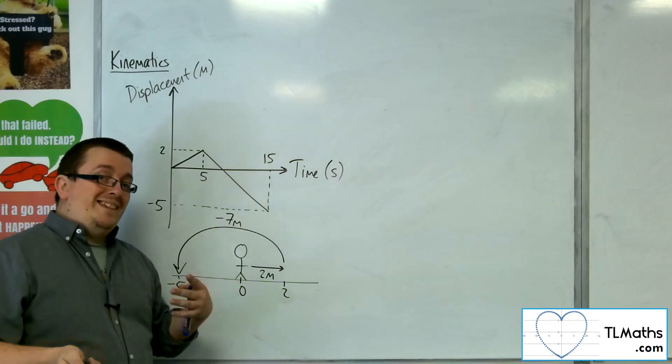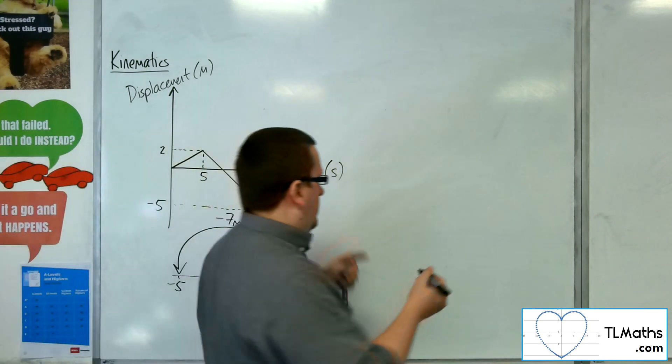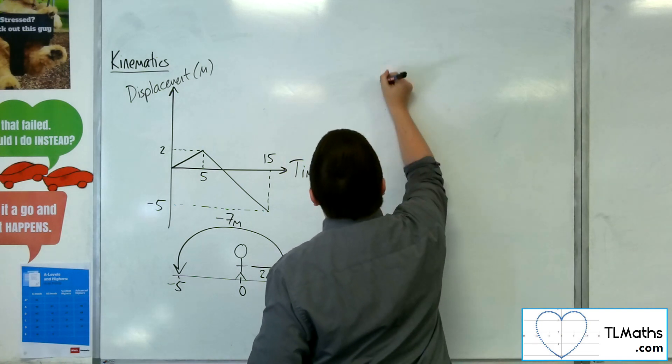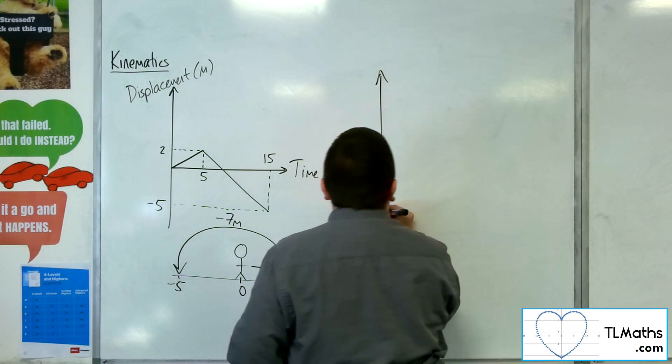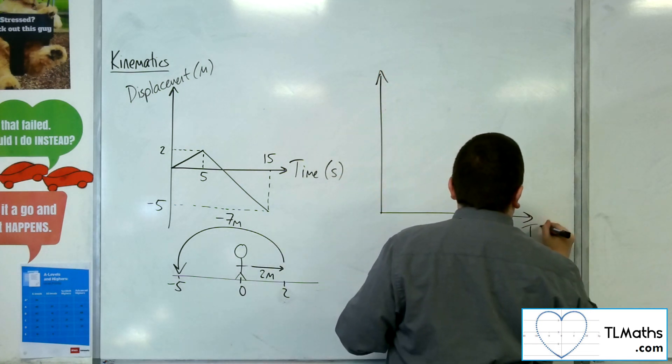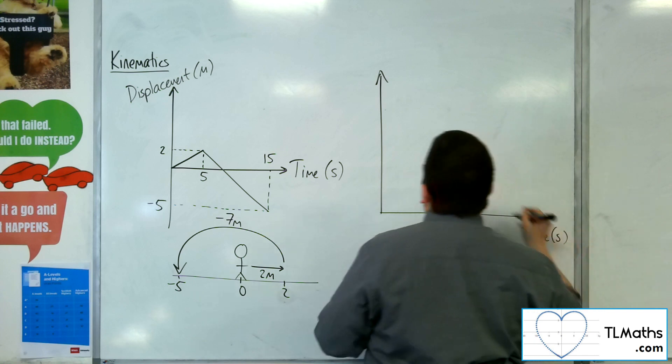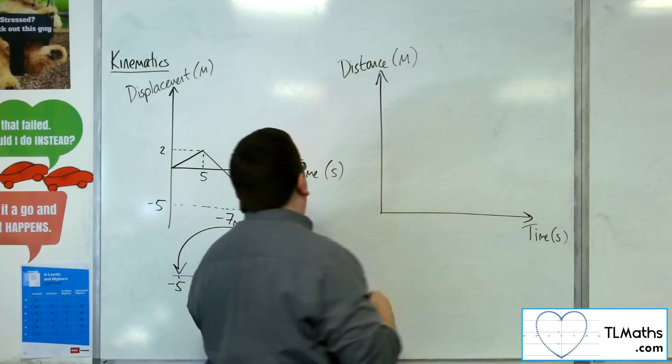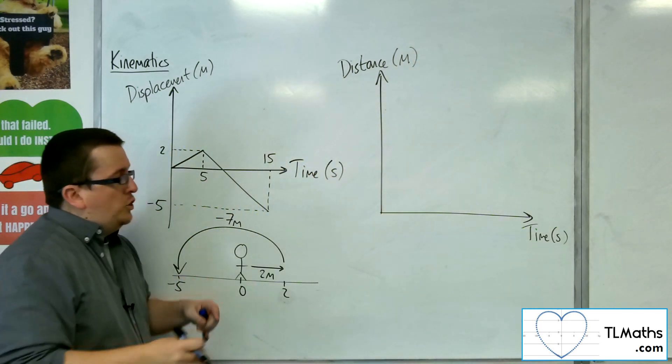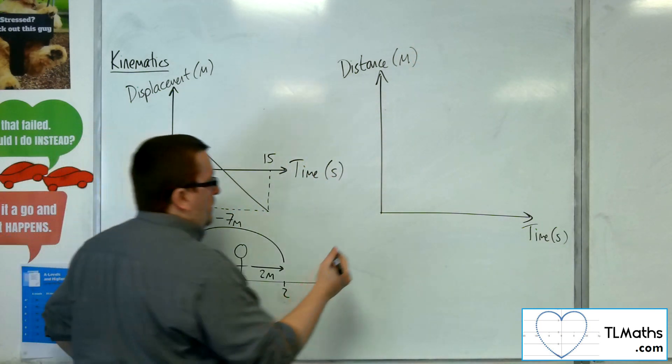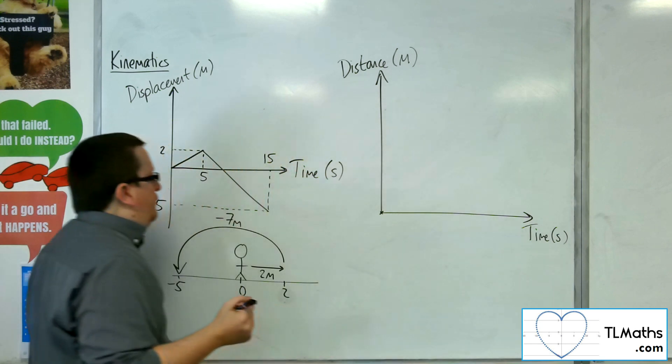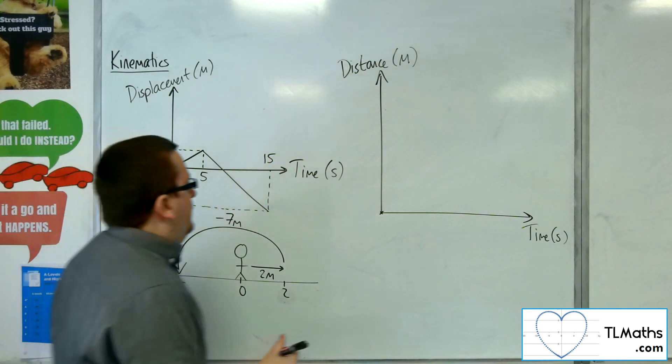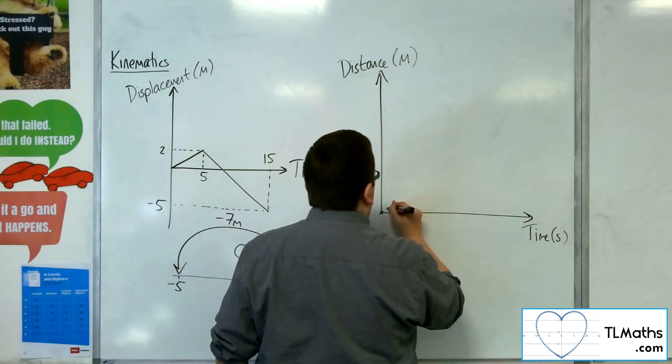Now, what would the distance time graph look like? So, distance time... Now, initially, they haven't moved anywhere, so they are at zero, zero. And in the first five seconds, they travel two metres.